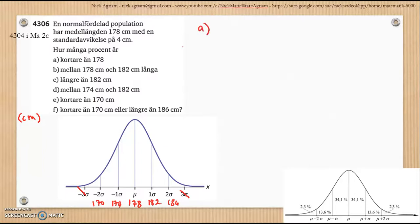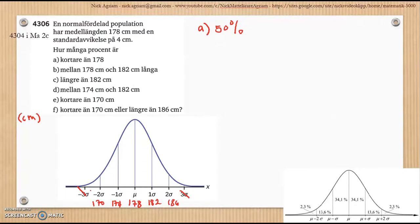Så i A kan vi se redan att det är 50%. Varför det? Här är medelvärdet. Medelvärdet är 178. Så alla dessa, den här som jag visar nu, är 50% — därför att det hela är 100%. Så den här är 50%. Mellan 178 och 182, som vi ser här, har vi den. Så D: 34,1%, eller bara 34.